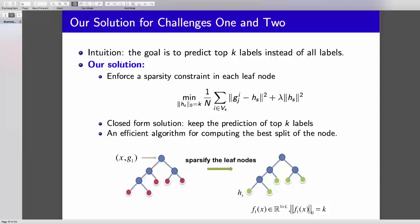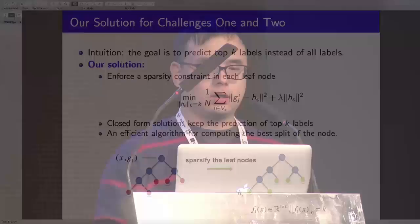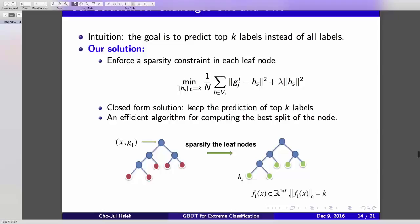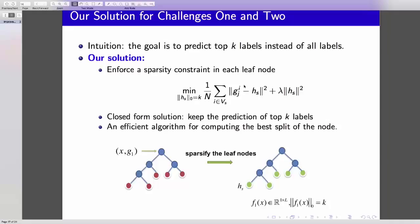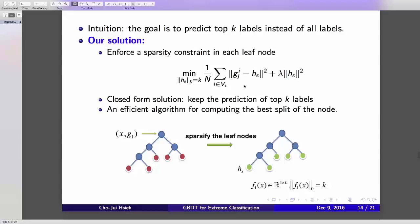Our solution is very simple. The intuition is that because the goal is to predict the top K labels for each data, we are not going to say for each data it will belong to 1 million labels, but maybe 10 or 100 labels. So for each leaf, we will try to enforce the sparsity of the output. How to do this? It's very simple. You just minimize the square loss with the zero norm constraint. We want to have K non-zero elements, and this problem has a closed-form solution. It's a very simple problem. And the better thing is we develop an efficient algorithm for computing the best split in each node. The training algorithm will also be very fast. The complexity is proportional to K instead of L.